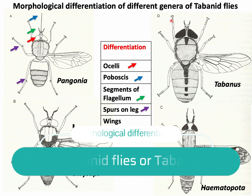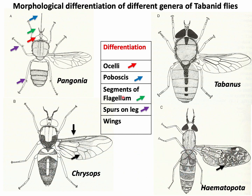For morphological differentiation of different genera of Tabanid flies: ocelli are well developed in Pangonia and Chrysops, whereas in Tabanus and Haematopota, ocelli are vestigial. Among these four genera, the proboscis is longer than the head only in Pangonia. Regarding flagellum segments: Pangonia has seven or eight segments, Chrysops and Tabanus have five segments, and Haematopota has only four segments in their flagellum.